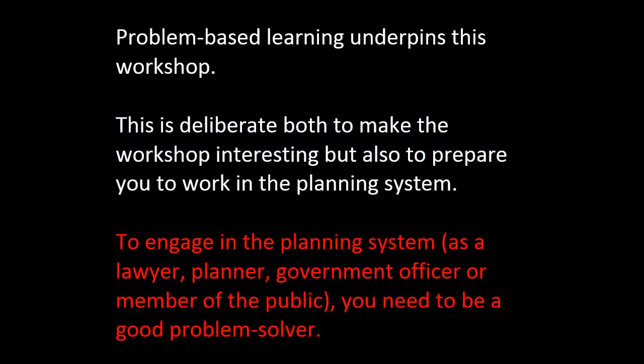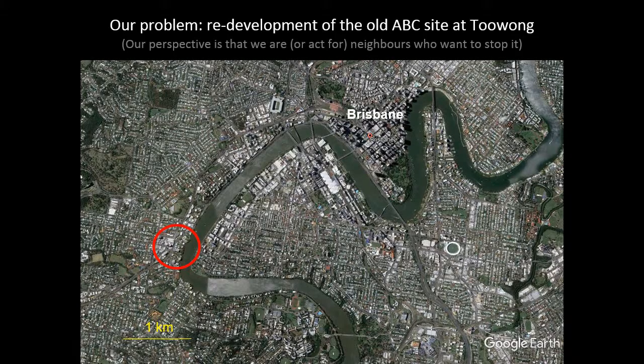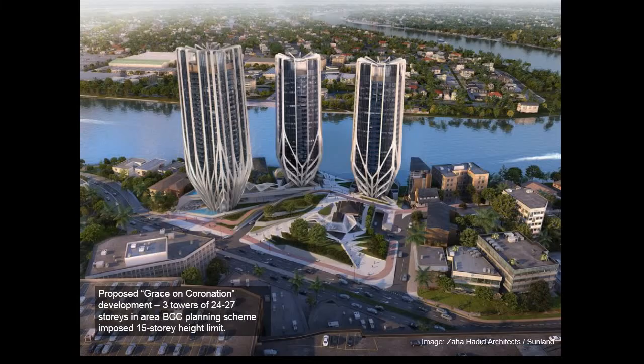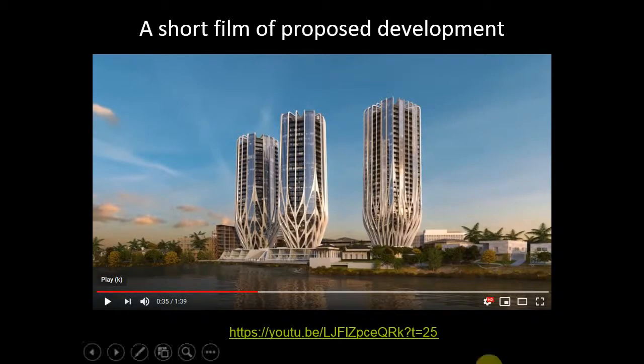I want to stick with problems because I think it makes the law interesting. You won't really understand the system until you engage with it. So what I'm trying to do with these lectures is help you get through the complexity without drowning. Our problem: we're going to take the perspective of acting for neighbours who are opposed and want to stop this project. The project is the redevelopment of the old ABC site at Toowong, which is on Coronation Drive, five kilometres west of here. This was the project proposed in about 2013-2014. In 2015 it was approved by Brisbane City Council and went through a big appeal process. There's a short film of the proposed development I'm just going to play.